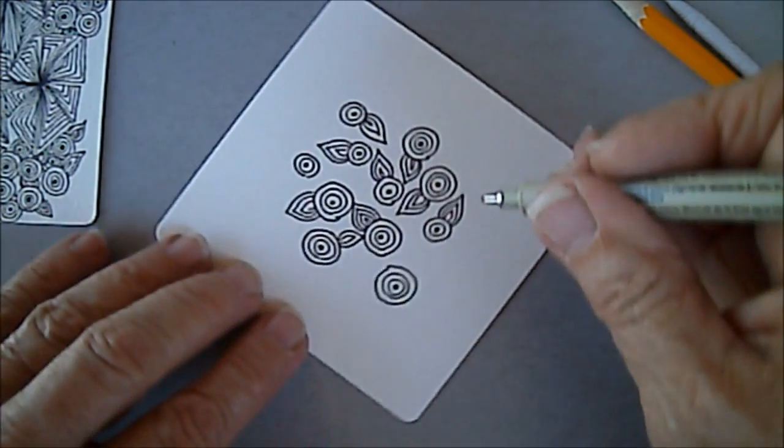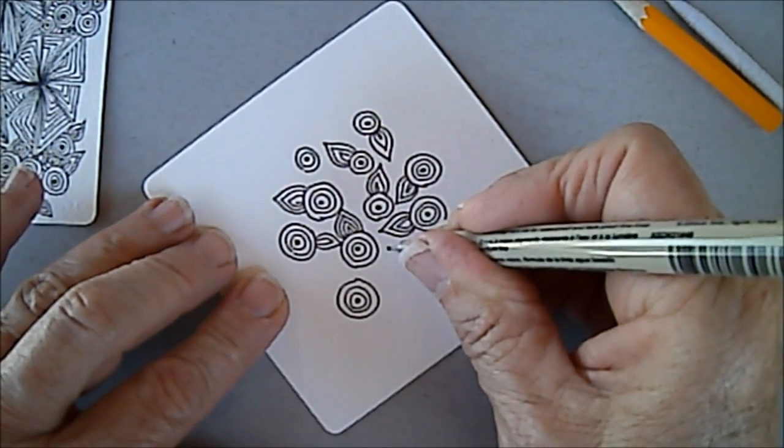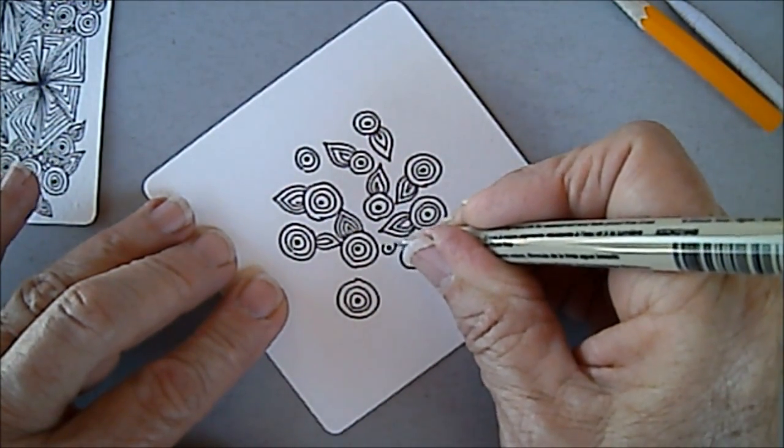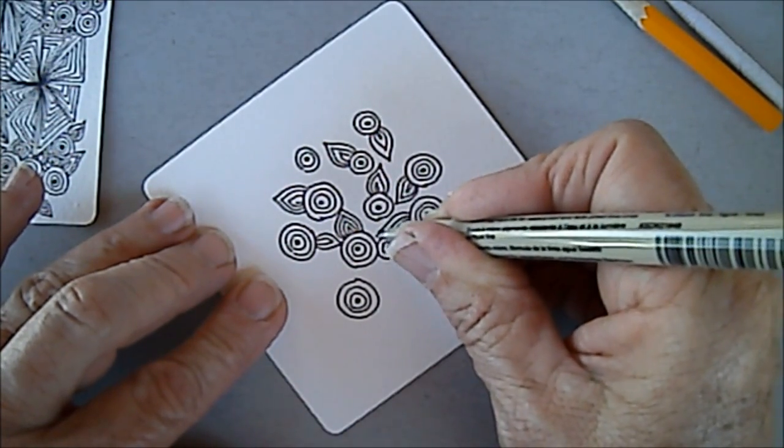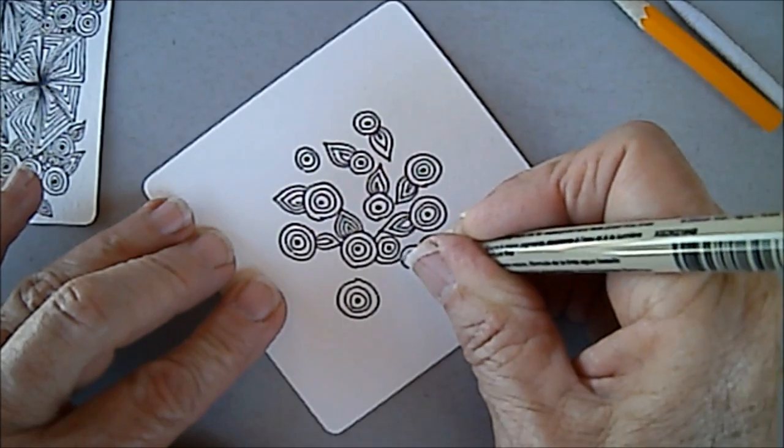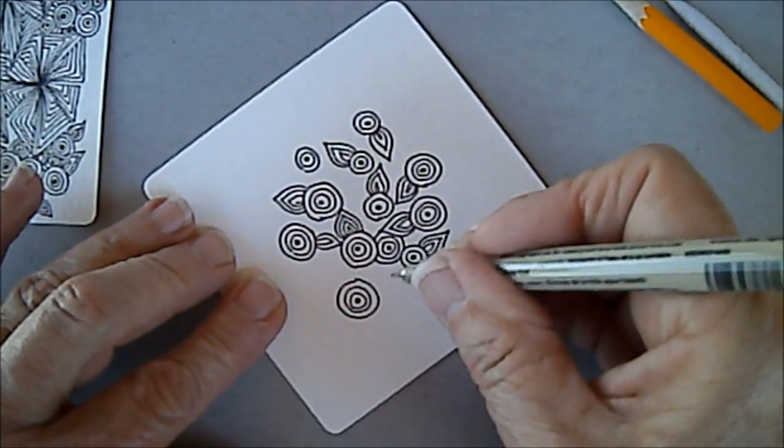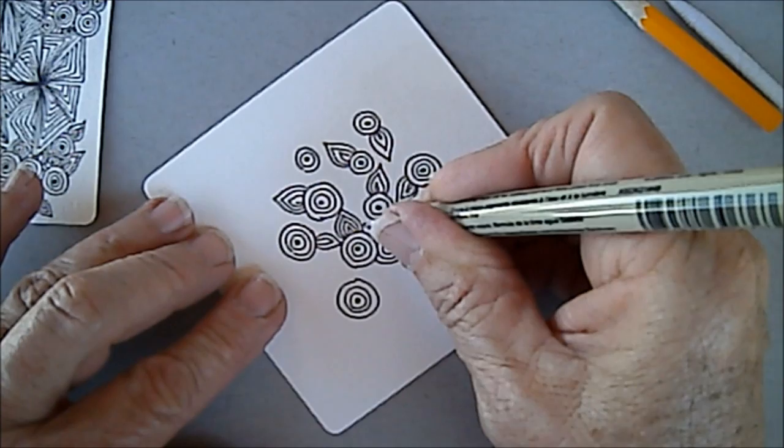Okay, so now I'm going to go back and I'm just going to put a dot here and echo around. And if I run into one of mine, I'm going to do the hollypaw effect. Put another dot right here.